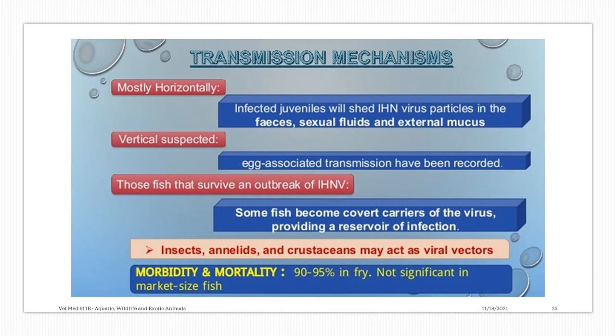There is also vertical transmission through the eggs. For those fish that survive an outbreak, some become covert carriers of the virus, providing a reservoir of infection. Insects, annelids, and crustaceans may also act as viral vectors. For morbidity and mortality due to IHN, it is high in fry, reaching up to 90% to 95%, and is not significant in market-sized fish.